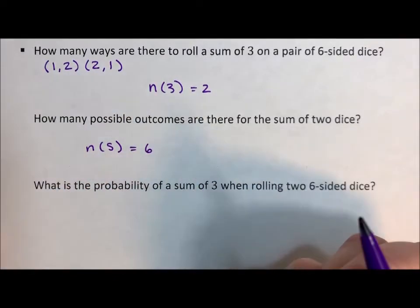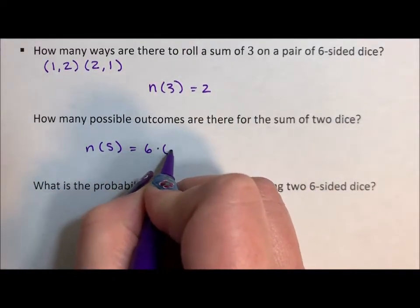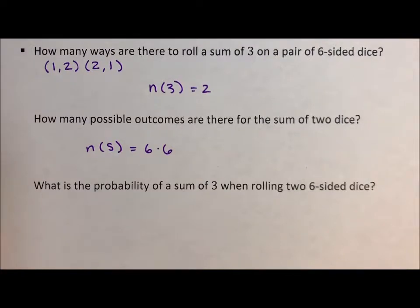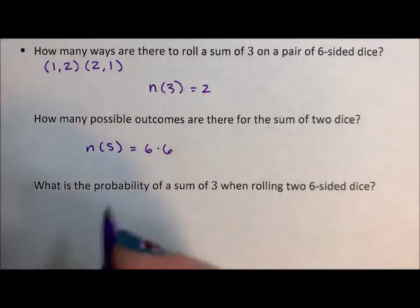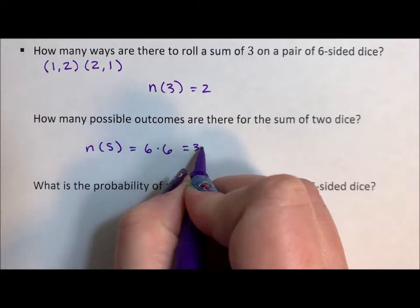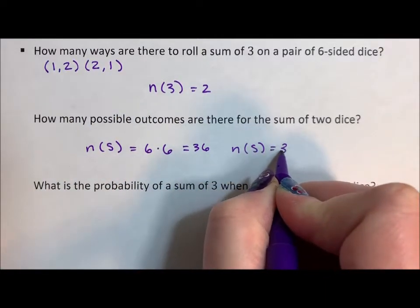Well, you can get six outcomes on the first die, six on the second. This is the fundamental counting principle. You multiply each decision point. Six times six is 36. So the number in the sample space is 36.